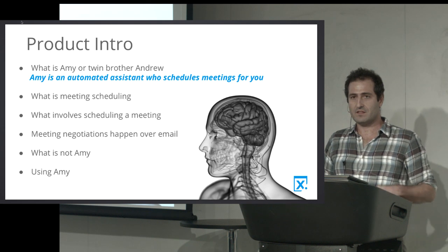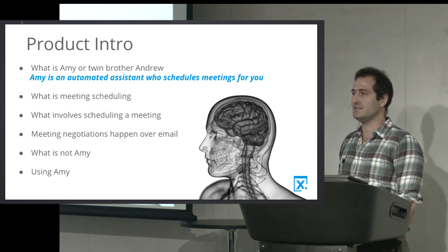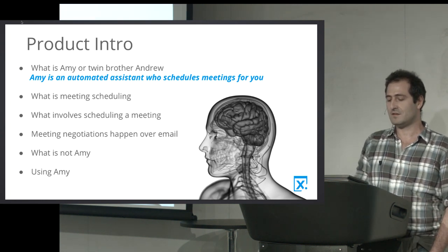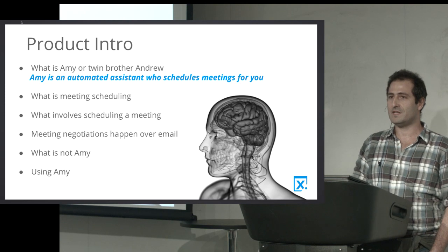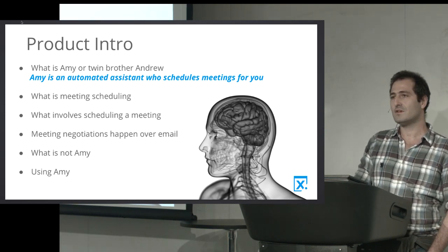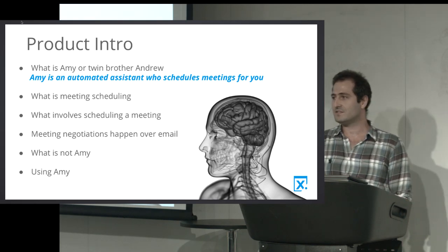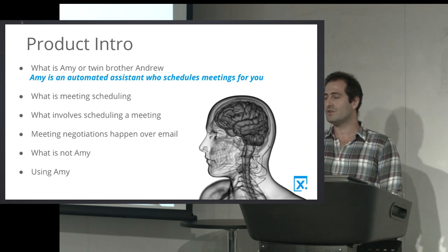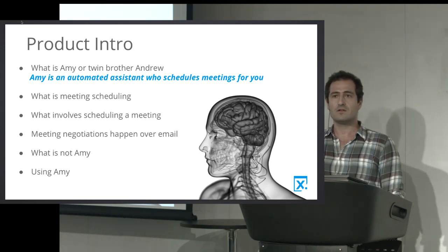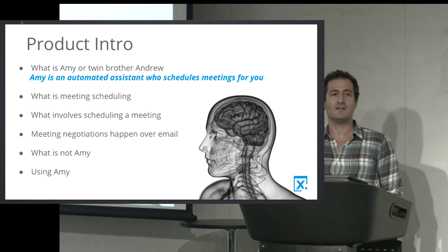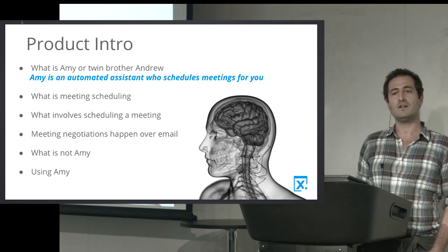So what is Amy? Amy is the thing we're trying to build at x.ai — it's essentially an automated scheduling assistant, nothing else, nothing more ambitious than that, but also nothing less. What does it mean to schedule meetings? Say you wanted to schedule a meeting with two people and I was your personal assistant. I would need to know something about your calendar availability, your preferences, and then compose a message to those two people saying 'so-and-so wants to meet with you,' proposing times and a location.